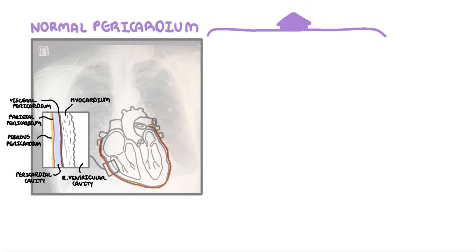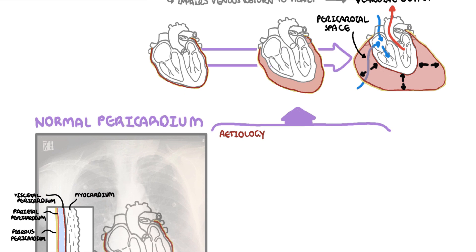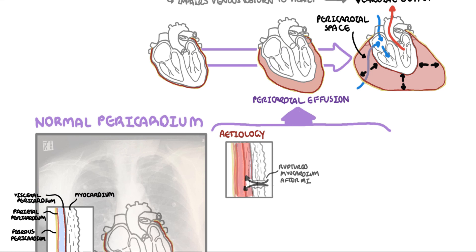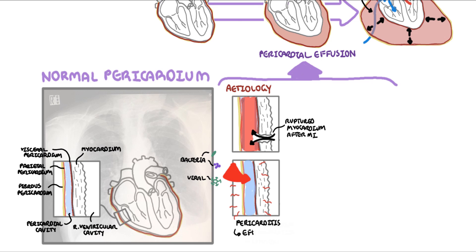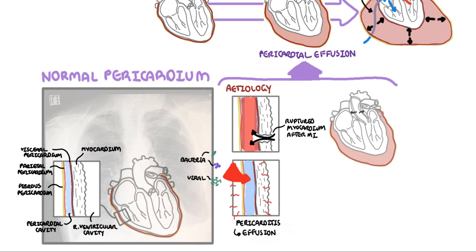The fluid in the pericardium can accumulate, and there are many causes. When this happens, it is called a pericardial effusion. A pericardial effusion may progress to a cardiac tamponade, which is where a pericardial effusion becomes symptomatic. Causes include accumulation of blood following a ruptured myocardium after a myocardial infarction. Any organisms — bacteria or viruses — can also cause inflammation of the pericardium, termed pericarditis, which causes accumulation of fluid within the pericardial space.